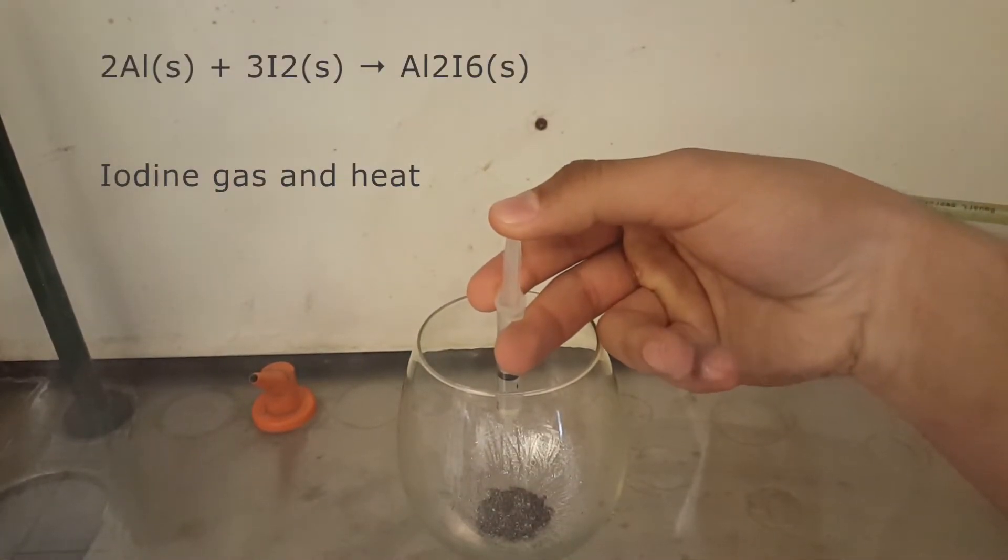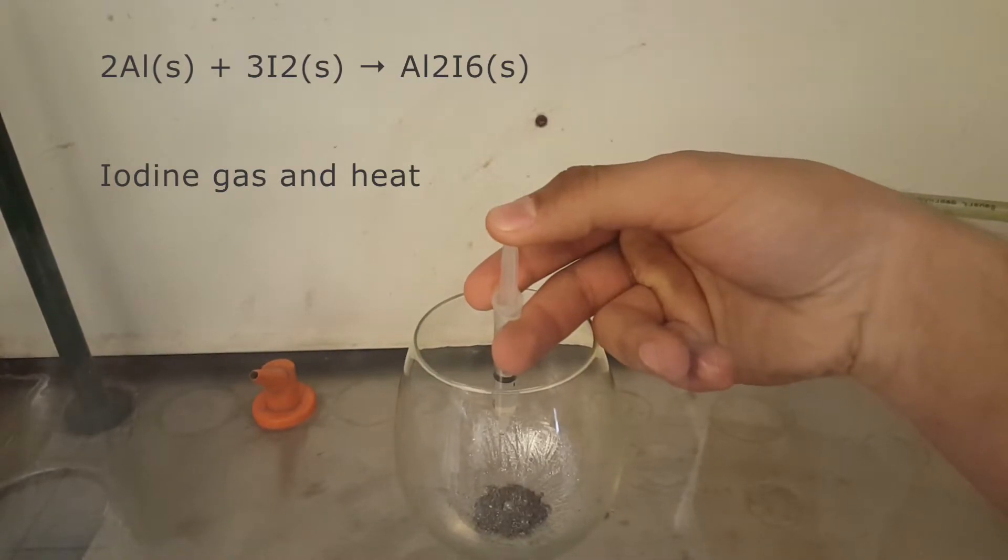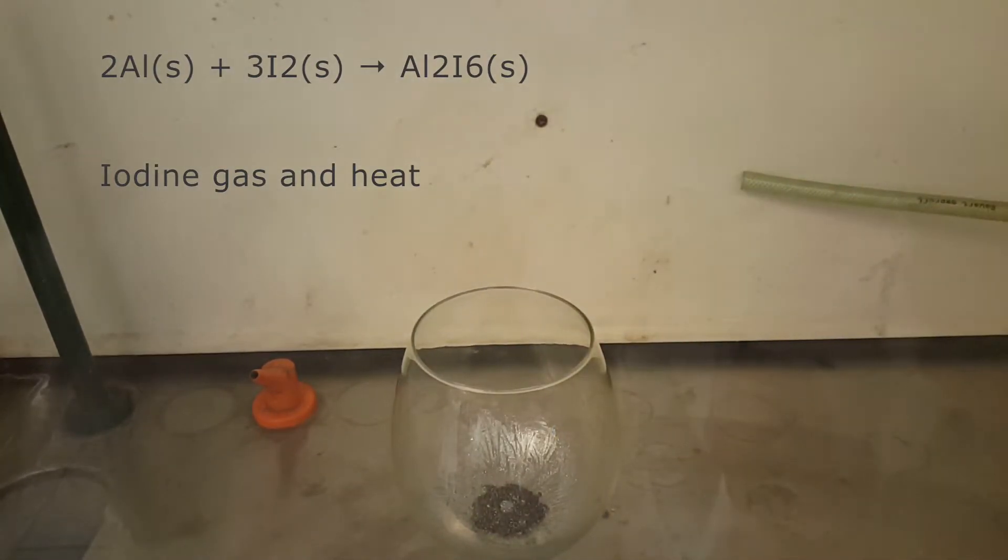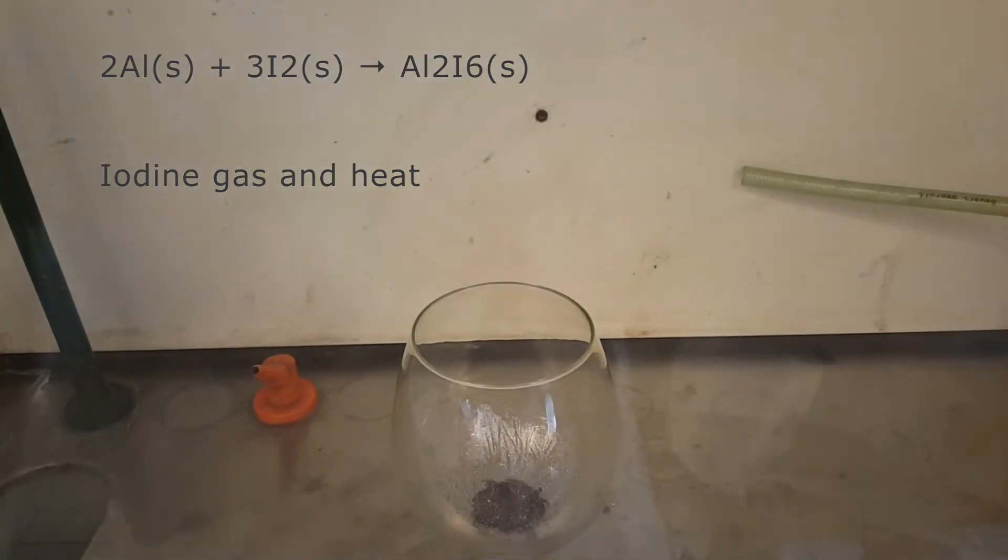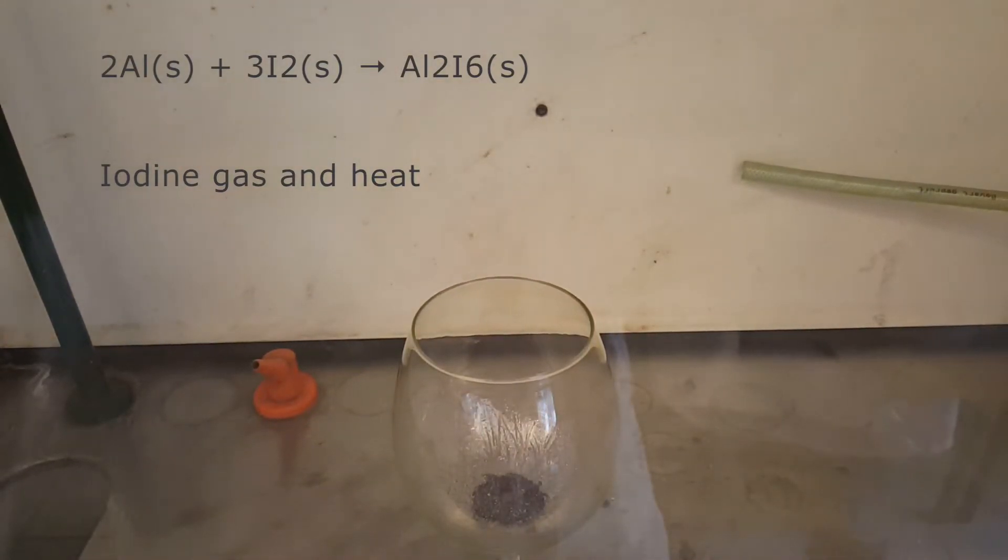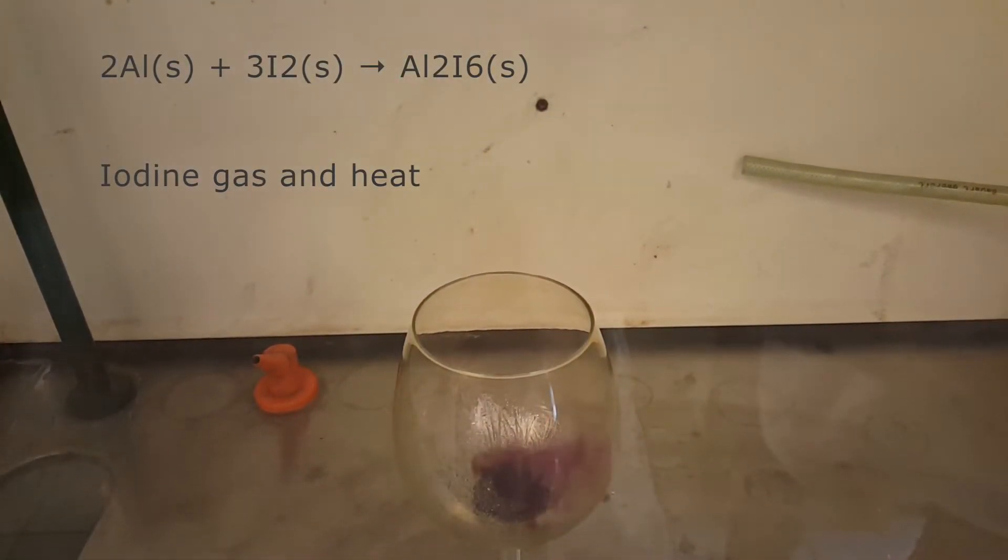The water works as a catalyst to get the reaction between aluminum and iodine started. The product of the reaction is aluminum triiodide and iodine gas, which is the purple smoke we see.